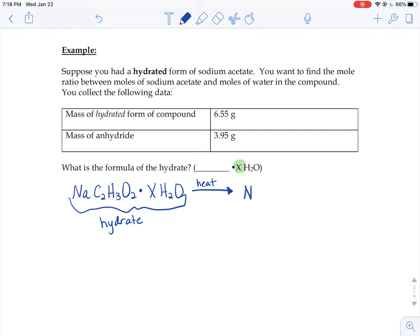They basically go off in two separate directions. The sodium acetate will stay behind inside the test tube. That part is either called the anhydride or the anhydrous salt. And then the water evaporates away. We know that the hydrate in this problem starts with a mass of 6.55 grams, and that the anhydrous part, after the water evaporates, weighs 3.95 grams.